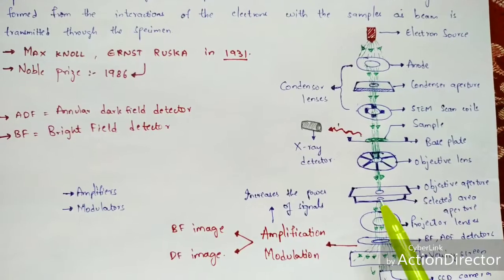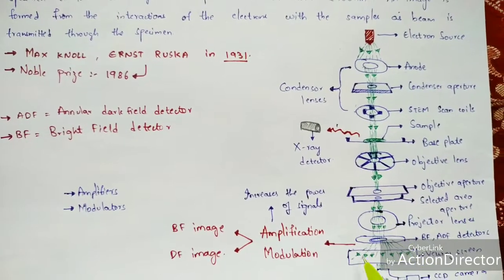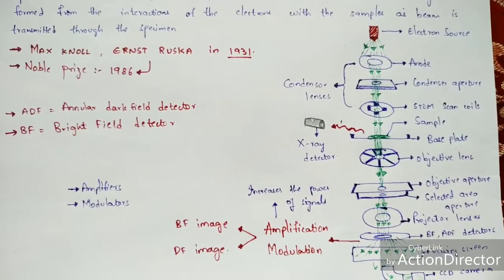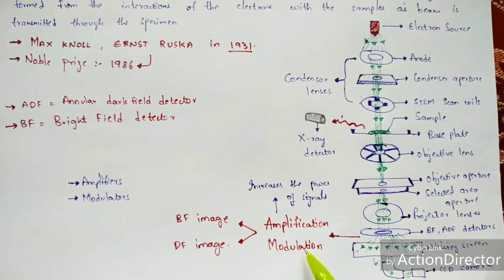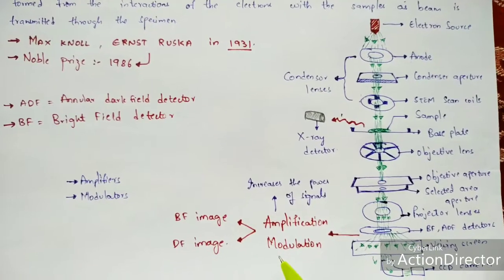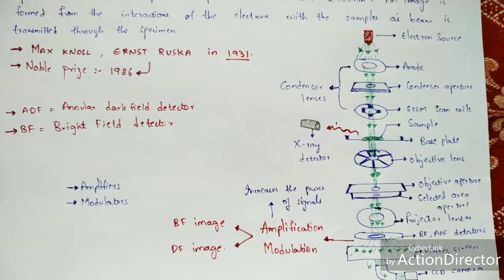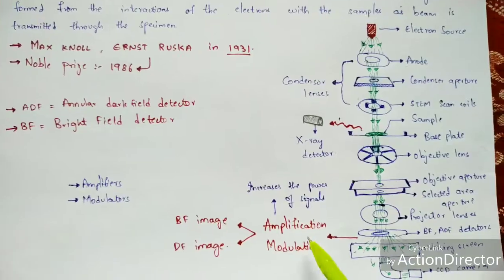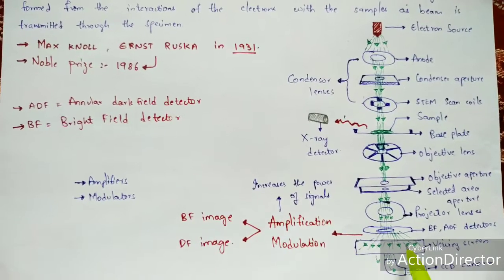The projector projects the image onto the viewing screen. Before viewing the image, amplification and modulation processes take place. Amplification is carried out by the amplifier and increases the power of signals. Modulation is carried out by the modulator and involves transmitting the type of signal received — the image signals received from the sample.